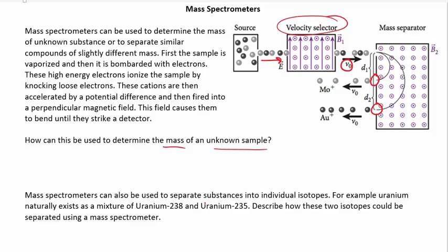So, if you have a sample of uranium, you'd be a mixture of the uranium-238 and the uranium-235.